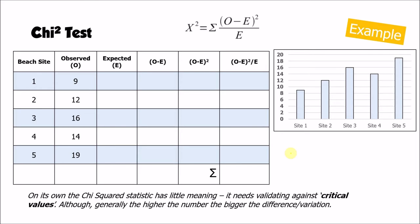Let's have a go at a worked example. Imagine we've been to the beach and visited five sites, labelled one to five. At each site I collected a sample of pebbles and measured the number of pebbles that were over five centimetres. So in site one there were nine pebbles over five centimetres, and at site five there were 19. I could be looking to see whether there is enough of a difference within this data to be statistically significant.